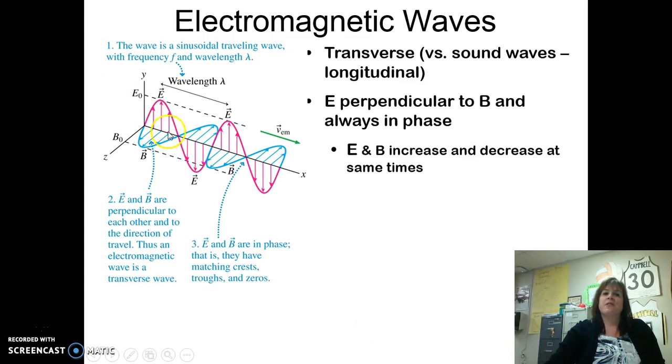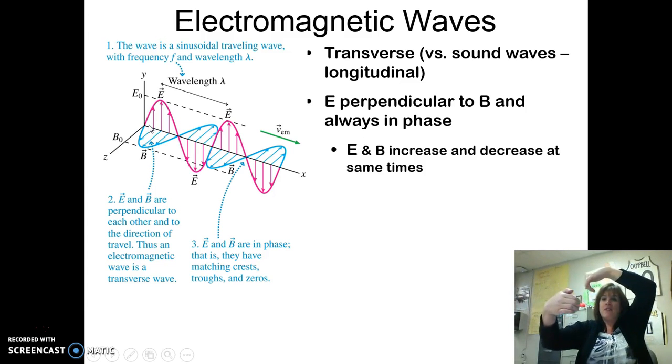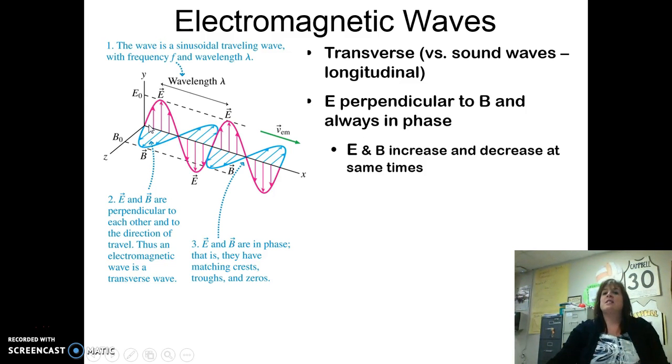So here I have an electric field on the y-axis. My magnetic field is always perpendicular to it, and always in the same phase. So that means as the electric field increases, the magnetic field increases, and as it decreases, it decreases together. So the electric and magnetic field are always in sync with each other. They're always in phase with each other. They have matching crests and matching troughs. And they're always perpendicular, but they move outward. So in this example, my electric field's on the y-axis, my magnetic field's on the z-axis, and it's traveling in the x-axis.